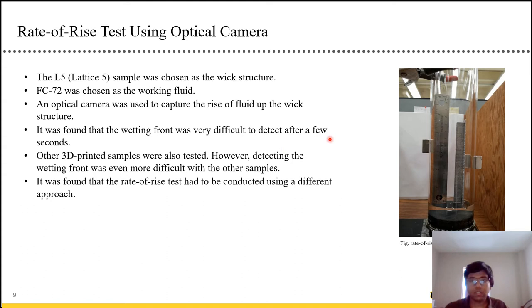We did the same thing. We started off with one of the 3D printed wicks. It's called the Lattice 5 sample, L5 sample. And the FC-72 was chosen as the working fluid. And we lowered the sample into the working fluid. And we started measuring the fluid uptake through the wick structure using an optical camera. And we found out that it was very difficult to find the wetting front. It was very difficult to see the fluid go up. And it was even worse in the other 3D printed samples. So this was the best sample we had.